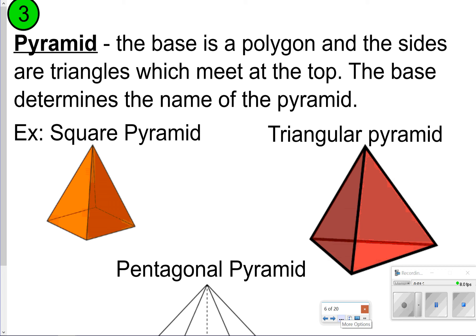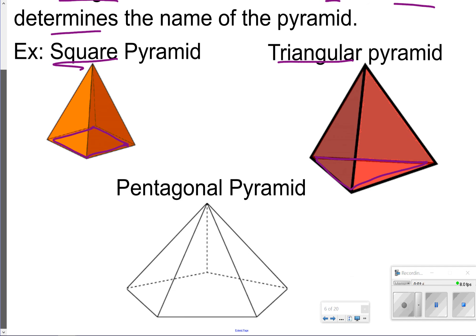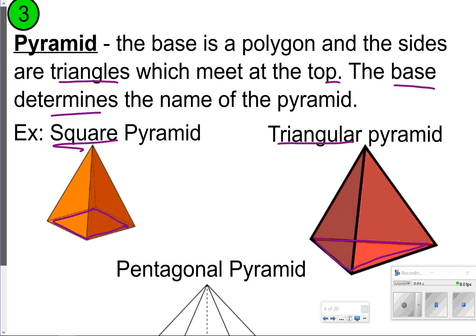The third thing to write down is what a pyramid is. That's when you have a base that's a polygon, and the sides are triangles which meet at the top. The base also determines the name of the pyramid. So if you have a square as your base, it's called a square pyramid. If you have a triangle as the base, it's called a triangular pyramid. And if you have a pentagon as a base, it's called a pentagonal pyramid. Go ahead and pause the video and write down what you see. Once you're done, click play.